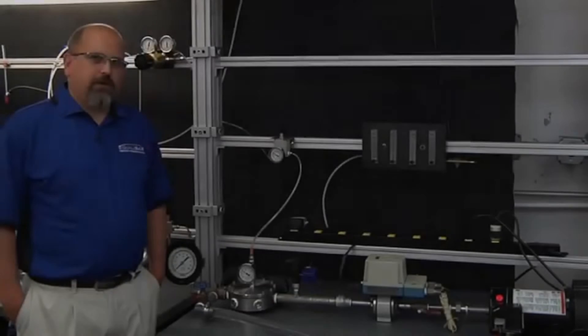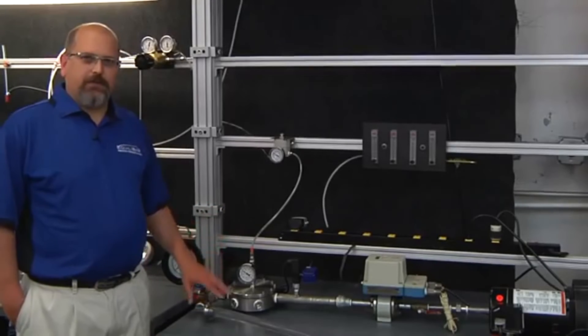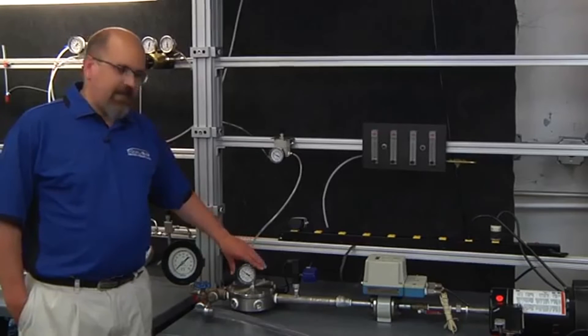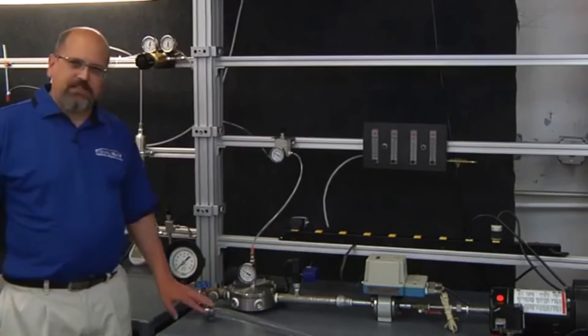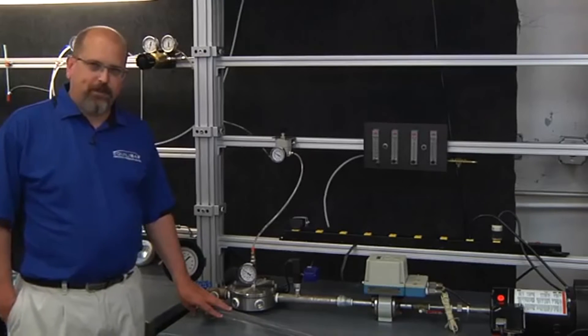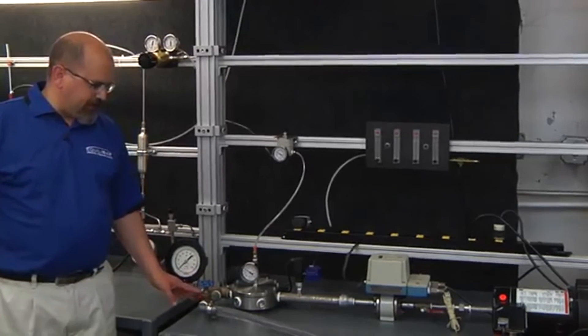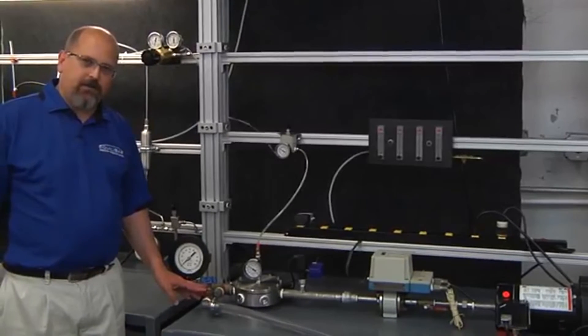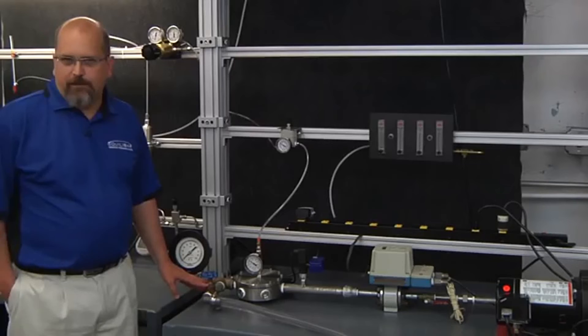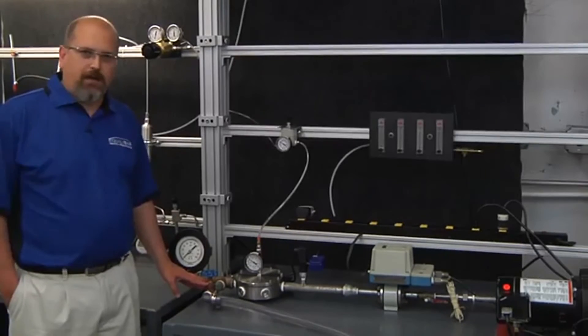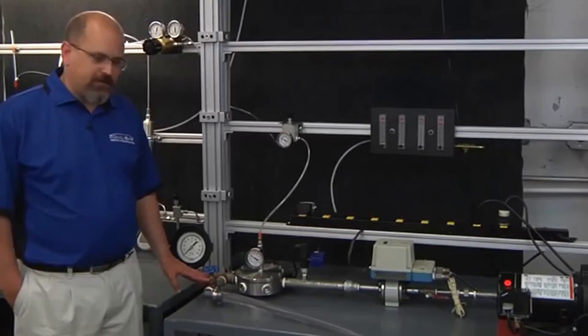For our next test, we're going to demonstrate that the flow rate through the system, once it's set by the Equilibar Back Pressure Regulator, is not affected by changes downstream in the system. I'm going to represent changes in the downstream system by this gate valve. So I'm going to modulate this gate valve, and that's going to represent a filter plugging up, or valves turning on and off, or other demands on the system.